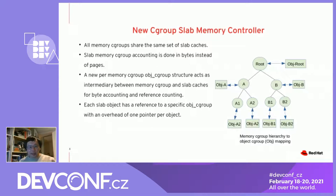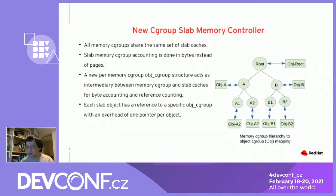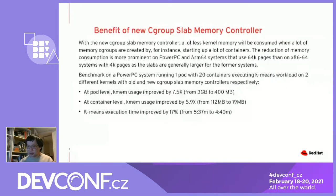What are the benefits of the new slab memory controller? With the new slab controller, we tend to use a lot less kernel memory for slab, and that can save quite a bit of memory when you need to create many memory cgroups — for instance, when you create a lot of containers. The memory reduction is actually more prominent on architectures like PowerPC and ARM64, because those architectures support 64k pages, while on x86 the page size is 4k.